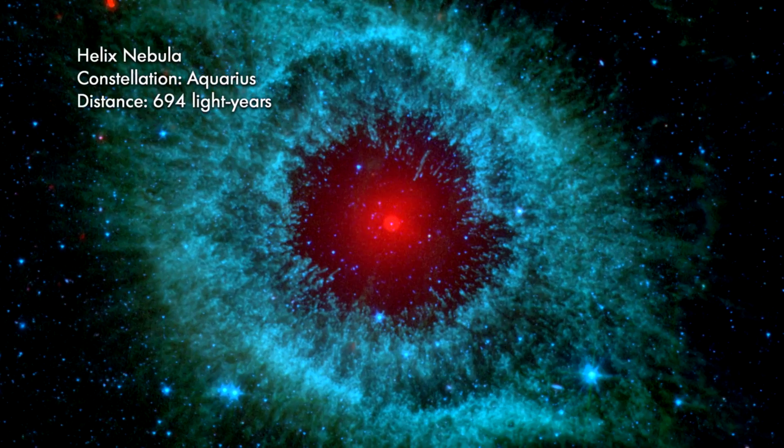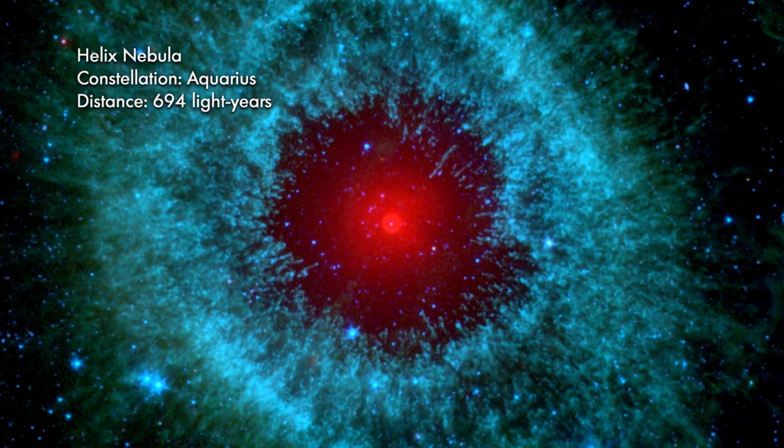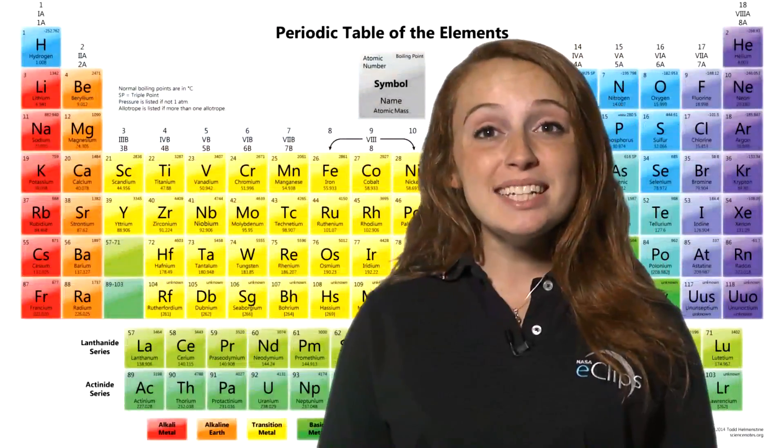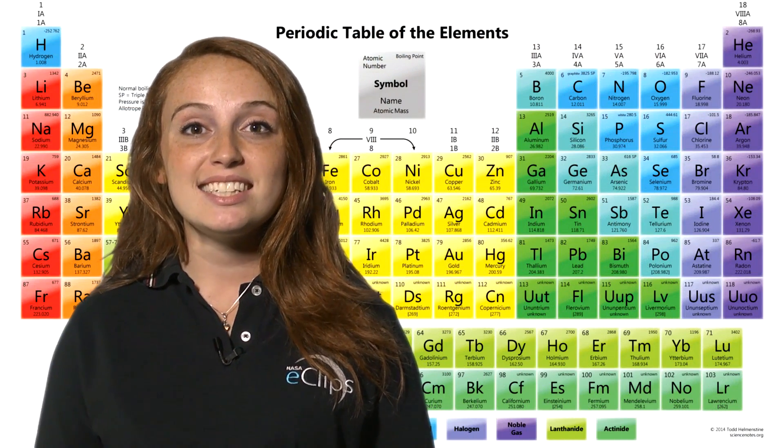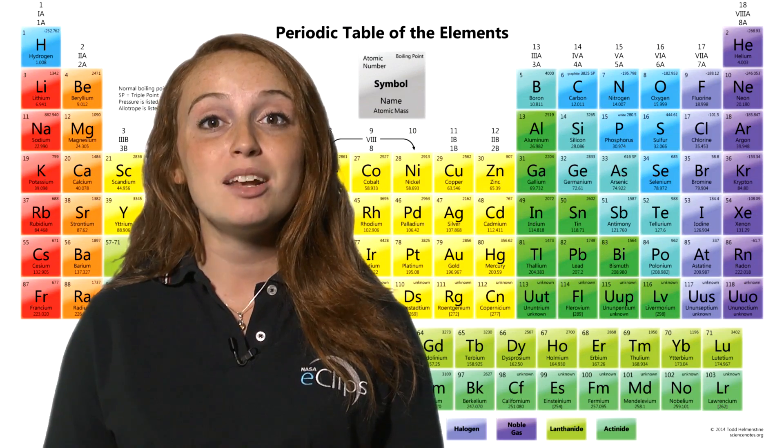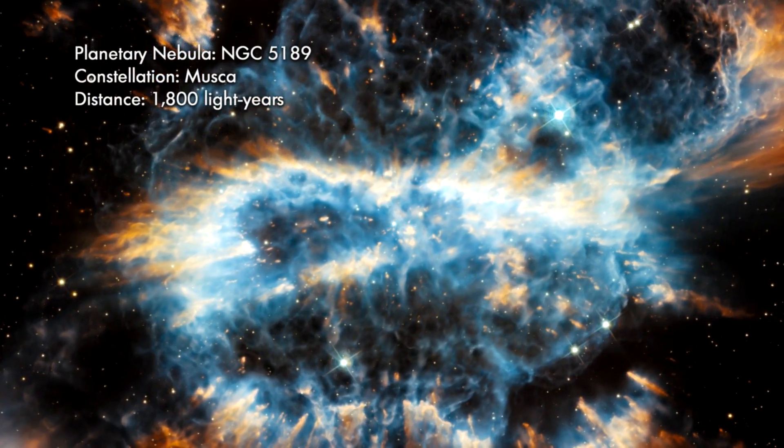And so, everything that your body is made up, everything that you see around you, all came from the center of a star. Pretty amazing, isn't it? When you look at that periodic table hanging in your science class, it represents all of the natural and man-made elements. Most of those natural elements were formed and fused inside of long dead stars.